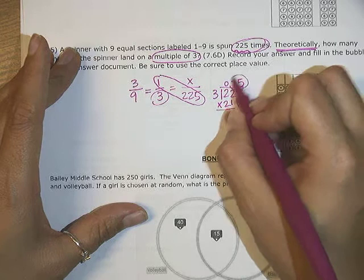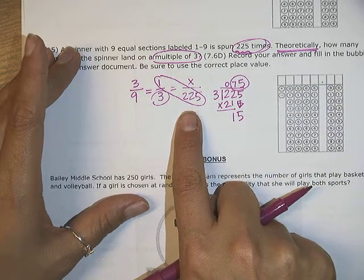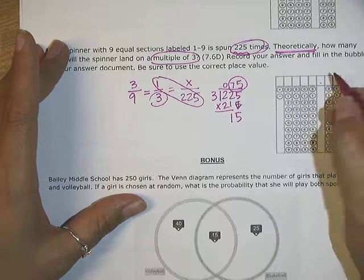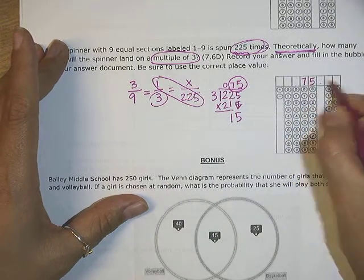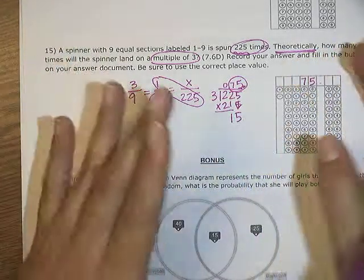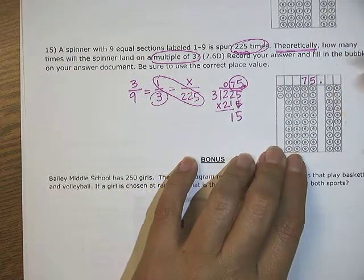So my lovely answer is, if it's spun 225 times, I would expect it to land on a multiple of three 75 times. And in every whole number, the decimal is floating there at the end invisibly. So there you go.